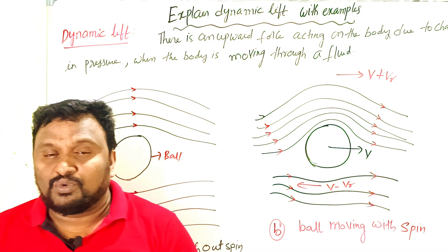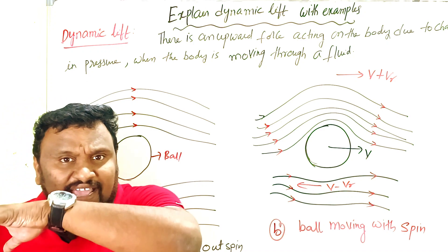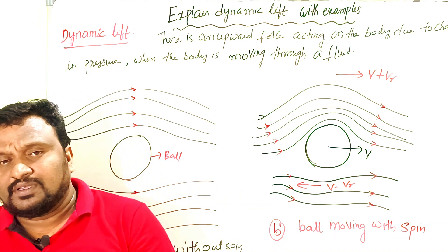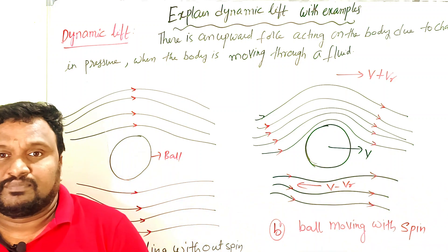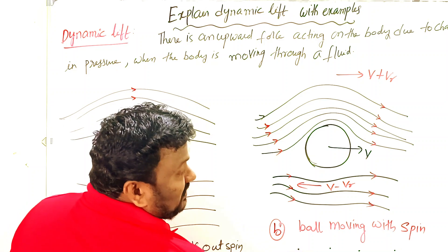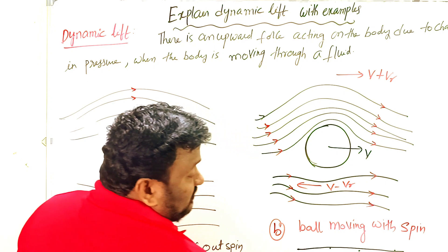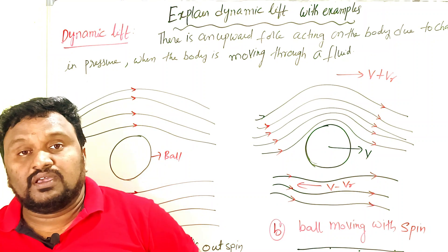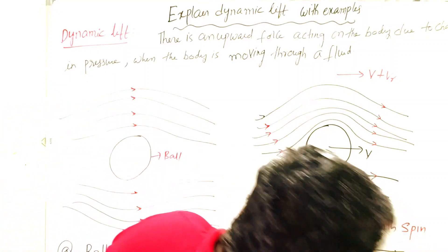What is meant by streamline flow? If you imagine a fluid divided into a number of layers, the lines which have the same velocity at different points are called streamlines. In a fluid, points having the same velocity are joined together to form one streamline. Similarly there are many streamlines — they never intersect each other because they have different velocities. That is streamline flow. Now let us see what happens in the case of a ball without spin and with spin.